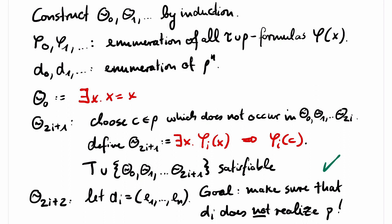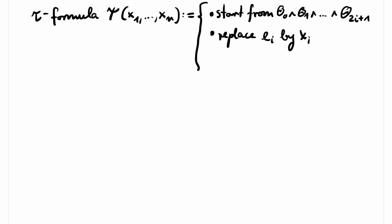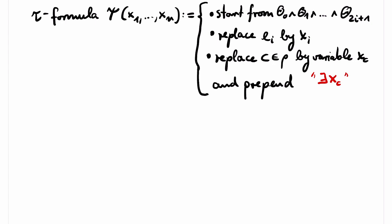In order to make sure that d i does not realize P, we proceed as follows. We first define a tau formula psi with free variables x1 up to xn by taking a conjunction of theta 0, theta 1, and so on until theta 2i plus 1. Then we replace the constant ei by the variable xi. We replace all other occurrences of constant symbols from rho in the formula by a new variable xc for a constant symbol c in rho. And finally, we existentially quantify all variables xc. Clearly, T union psi is satisfiable.